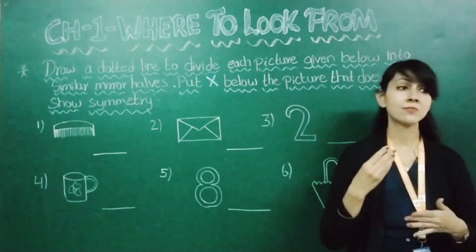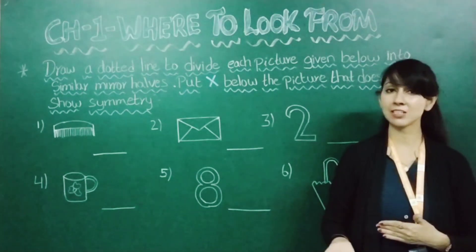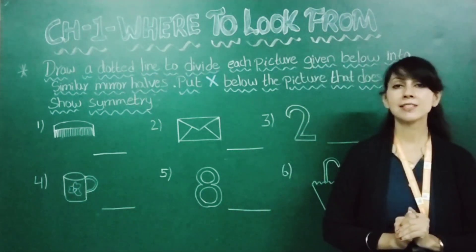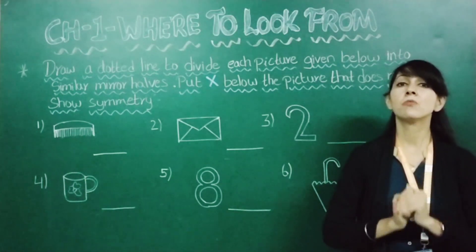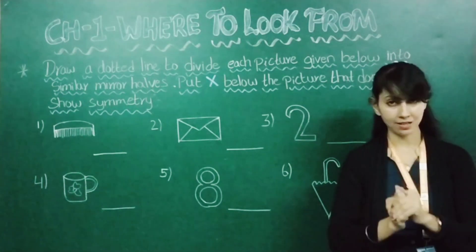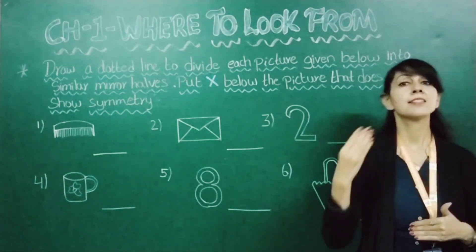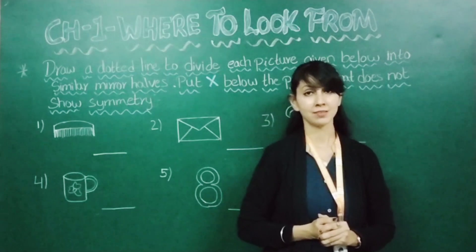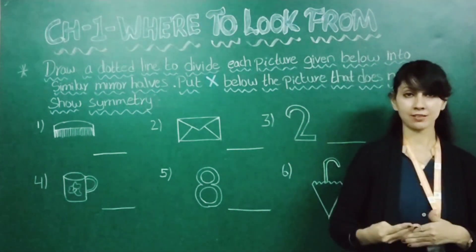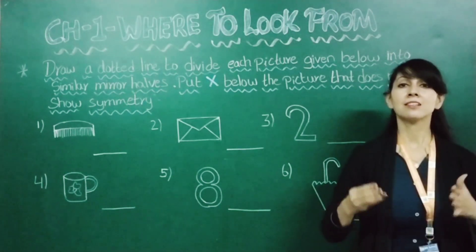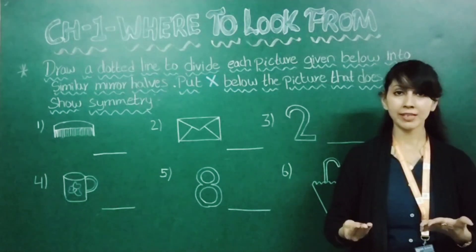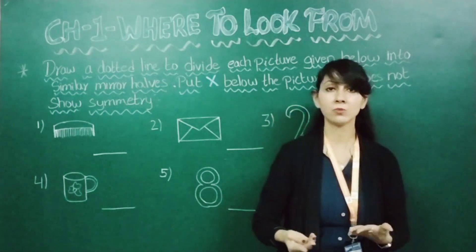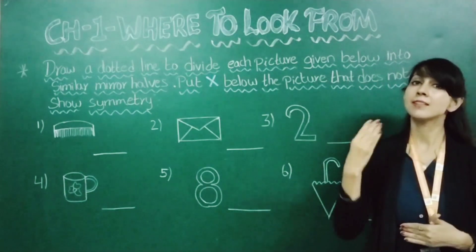We have also seen rangoli patterns made during festivals. The third point is mirror halves, meaning reflection or symmetry — a line that divides a figure into two equal parts. When you divide a figure and get both parts the same, that is called symmetry. If the two parts are unequal, it does not show symmetry.